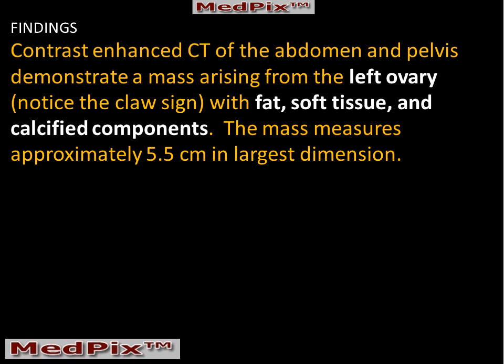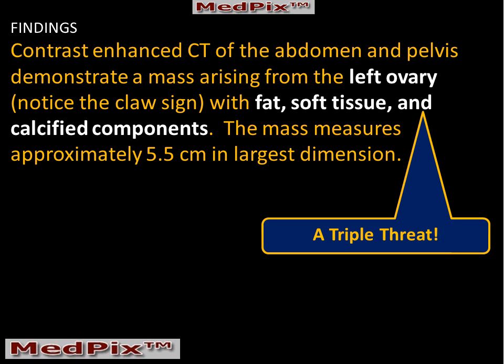What is this mass in the left lower quadrant? The lesion is in association with the left ovary, and it contains a mixture of fat, soft tissue attenuation, and calcified components — a true triple threat lesion.